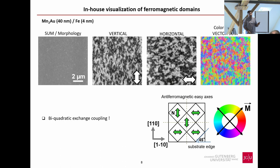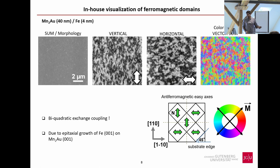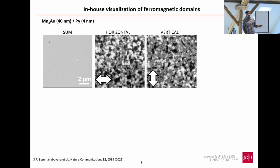This 45° orientation is most likely due to the epitaxial growth of iron on Mn₂Au. Even at room temperature, iron grows epitaxially in the (001) orientation on Mn₂Au — something we did not expect initially. Iron is known for its large magnetocrystalline anisotropy, and the 45° orientation is a compromise between the exchange coupling to Mn₂Au and iron's own magnetocrystalline anisotropy. One way to test this is to use a much softer ferromagnet without its own magnetocrystalline anisotropy.